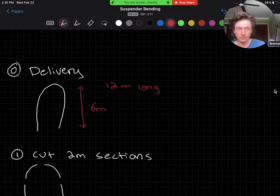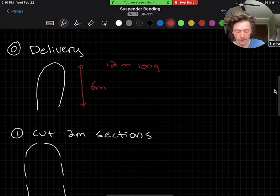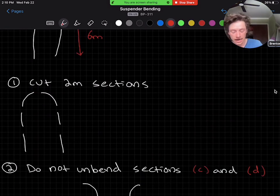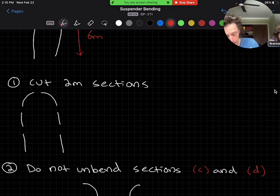First, as you've seen in the videos, you're going to cut these into 2 meter sections. You'll have a series of usable sections. We'll label them A, B, C, D, E, and F.